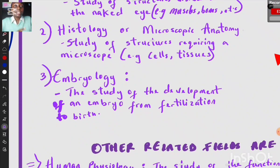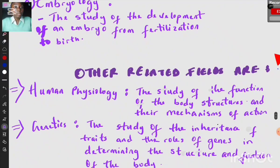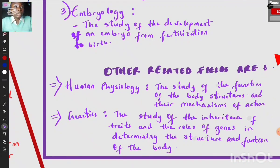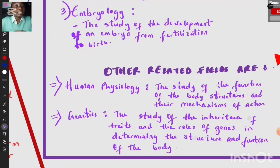We also have embryology — the study of the development of an embryo from fertilization to birth, dealing with the formation of an organism. Other related fields include human physiology, which is the study of the function of body structures and their mechanisms of action, and genetics, which is the study of the inheritance of traits and the roles of genes in determining the structure and function of the body.